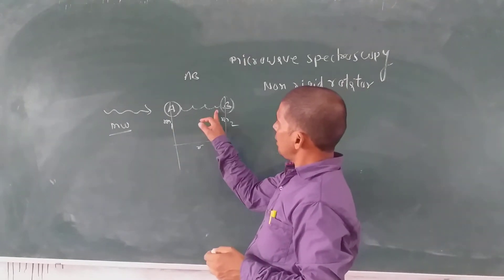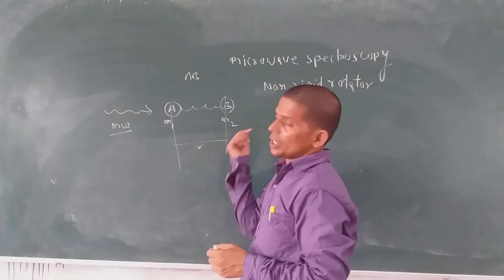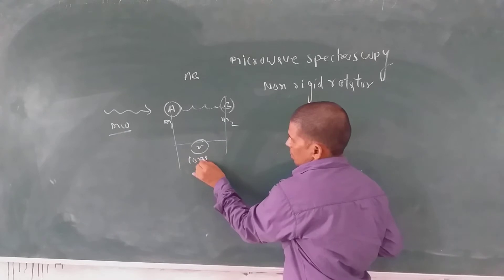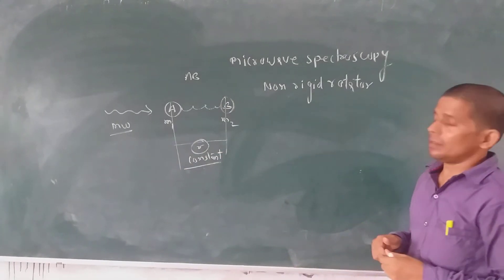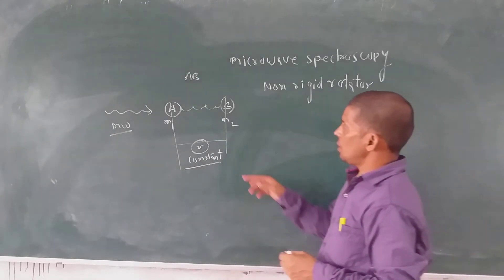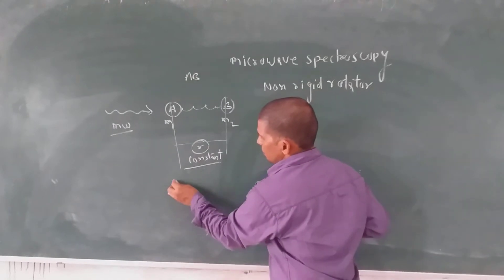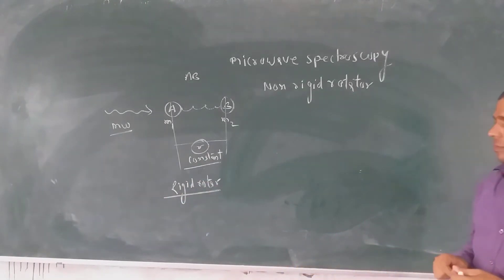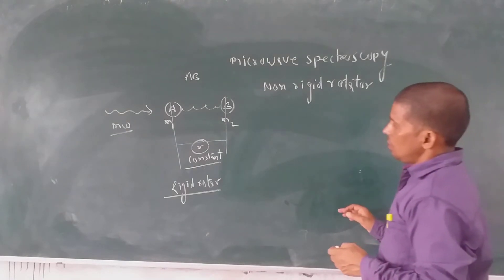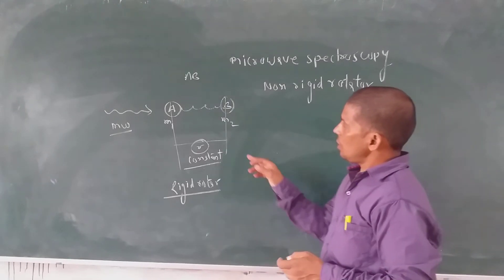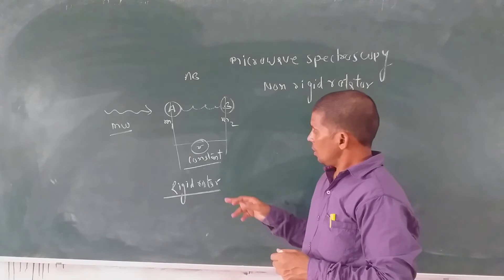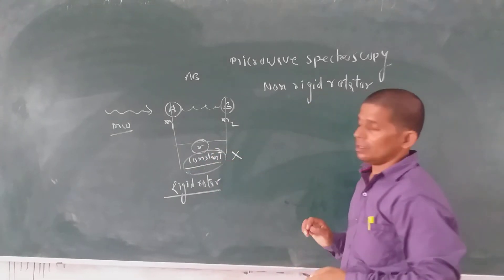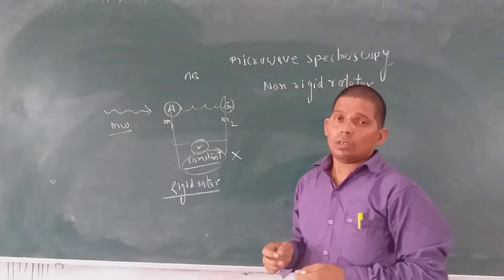This diatomic molecule undergoes rotational motion. If the internuclear distance is kept constant, then this diatomic molecule is called a rigid body diatomic molecule. If the internuclear distance is constant, then the molecule is a rigid rotator.